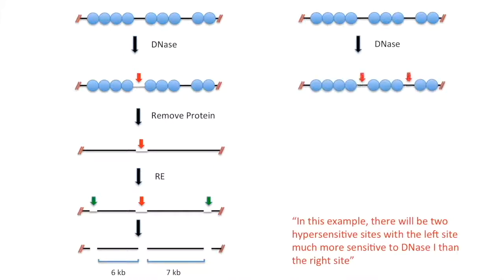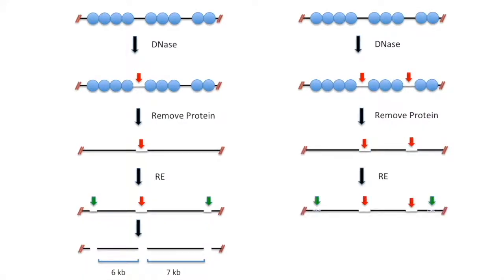So we can see here that not only does DNase cut at the left hypersensitive site, but also at the right hypersensitive site. This leaves us with fragments of 6, 5, and 2 kb.